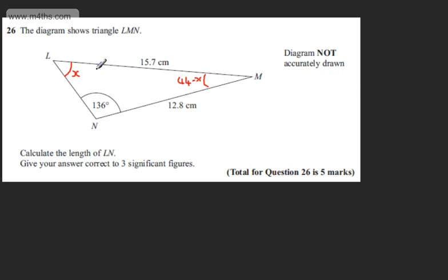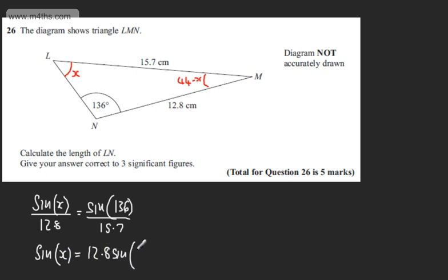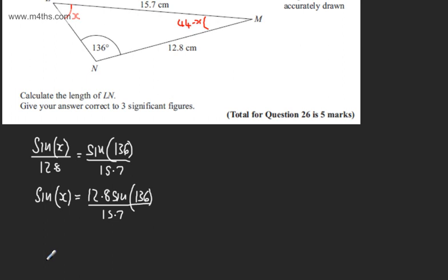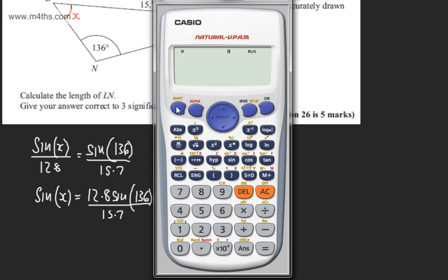Let's use the sine rule to find the value of X. We can say that sine of X over 12.8 equals sine of 136 over 15.7. From here, sine X equals 12.8 times sine of 136 divided by 15.7. Making sure my calculator's in degrees mode, I'll find this value. So shift mode 3 to put it in degrees mode, and I'll do the inverse sine of 12.8 sine of 136 degrees.